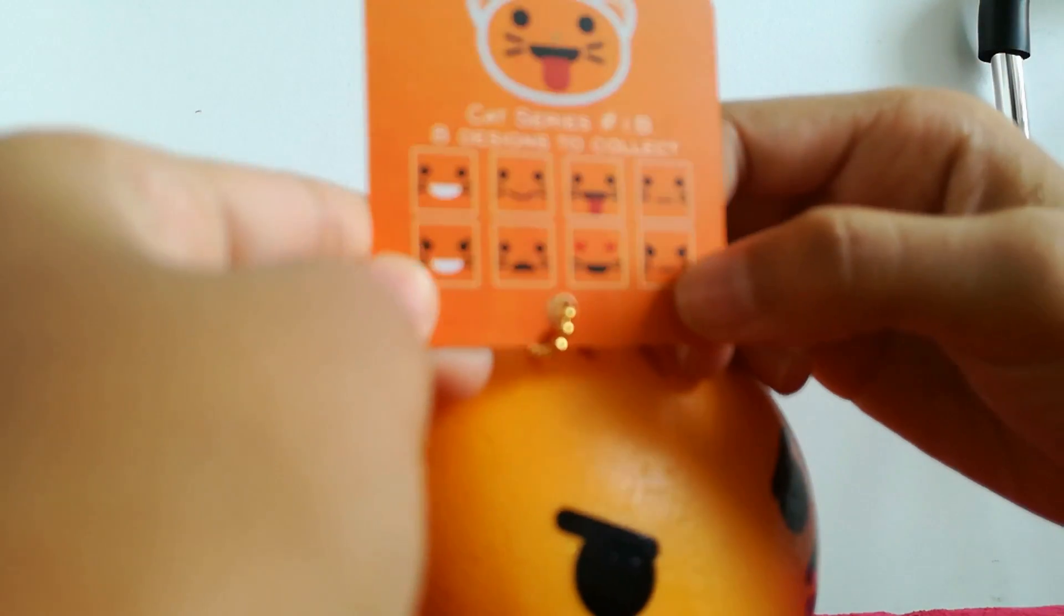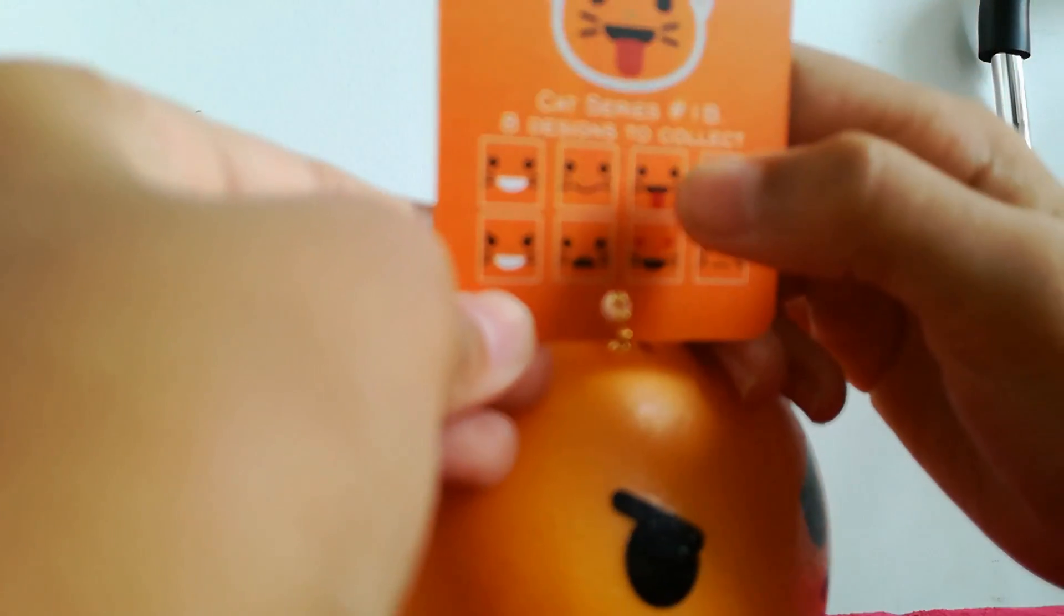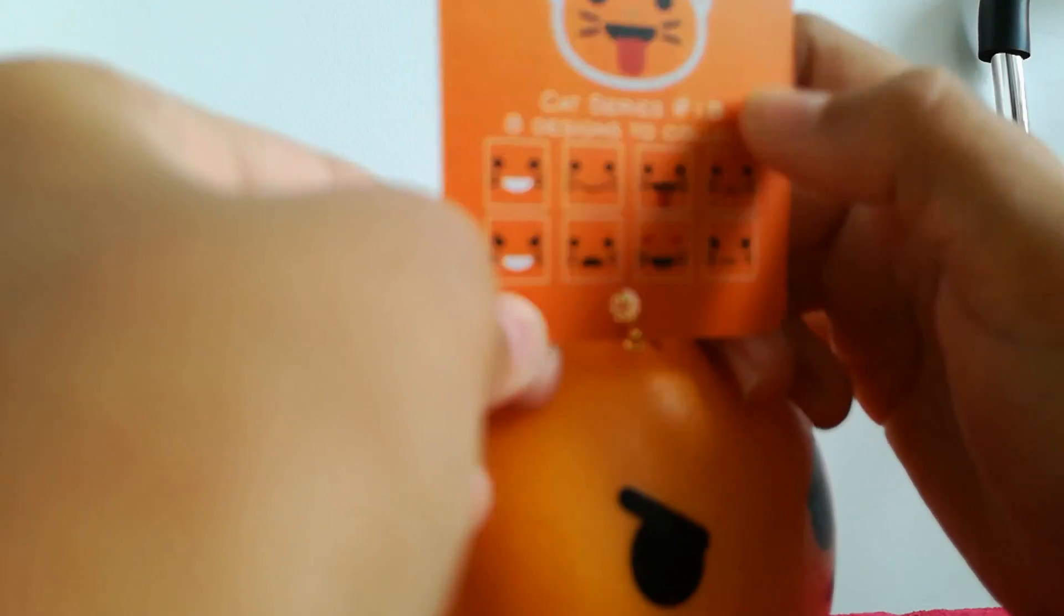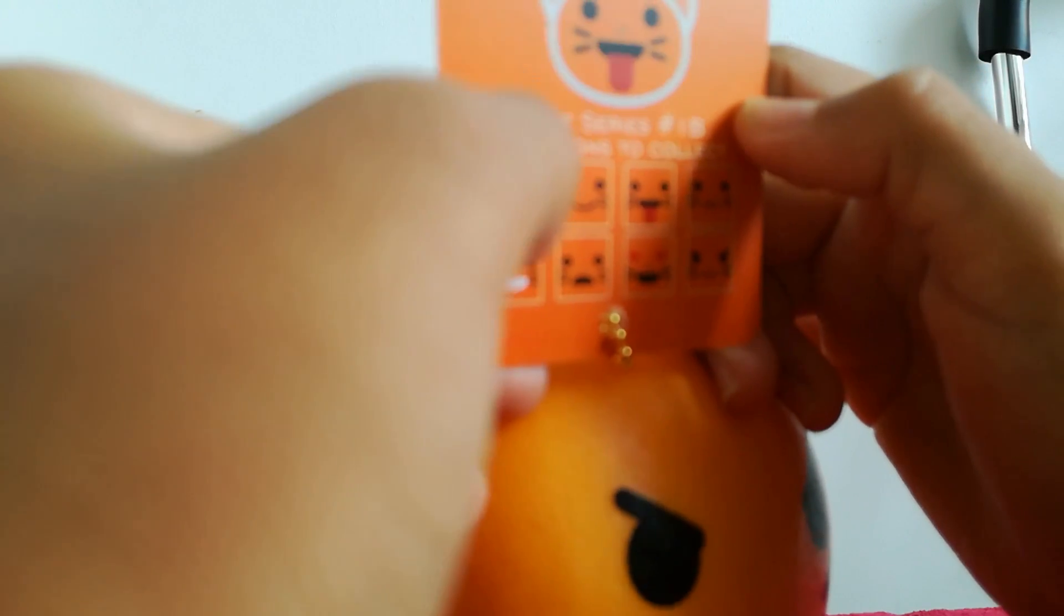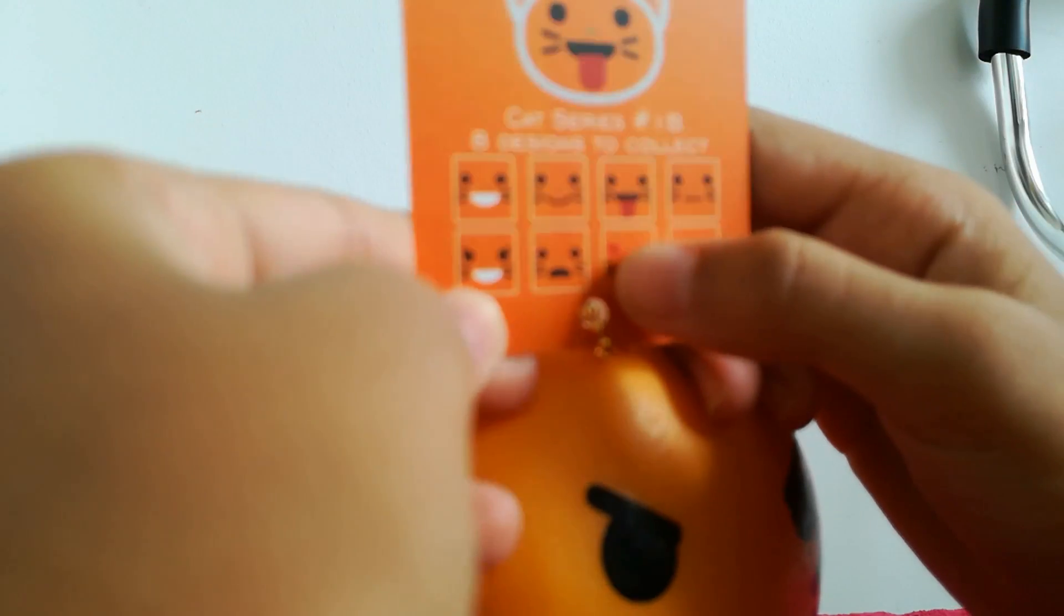of the cat that you can collect because this is the cat series if you guys can see. And I got this one right here at the end, but I really wanted this one with the tongue sticking out. I really want the normal face with the teeth, the tongue sticking out, and the heart eyes. But my brother already bought me this one.